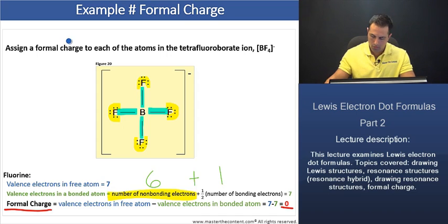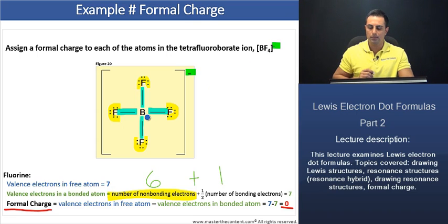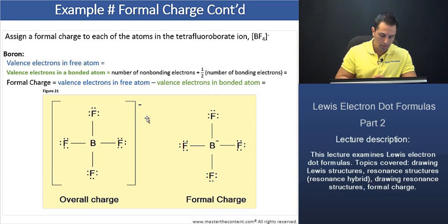Now, we should also note that the sum of the formal charges for all the atoms should equal the charge on the ion. And we see here that the charge on our ion is one. Therefore, that negative one formal charge must be on the boron atom. Because of the fact that we know that fluorine's formal charge is zero, thus this negative one formal charge must be on the boron atom. Let's proceed to our next slide and take a look at that.